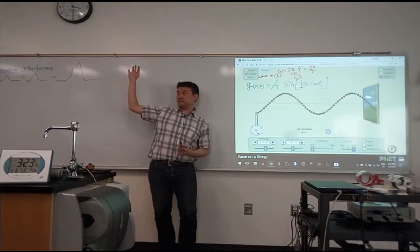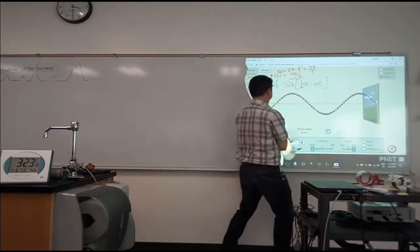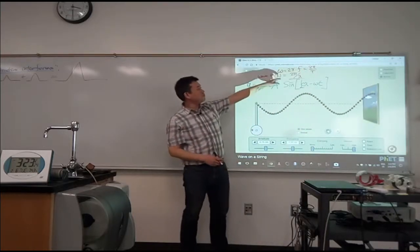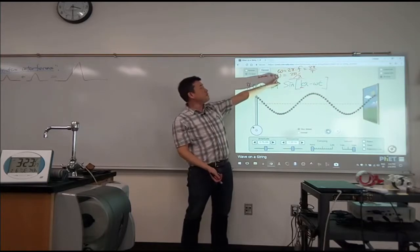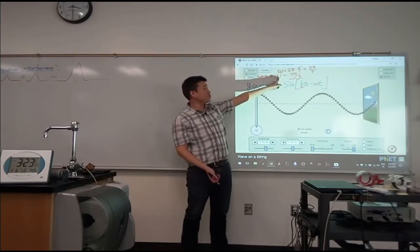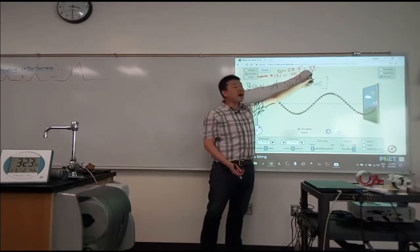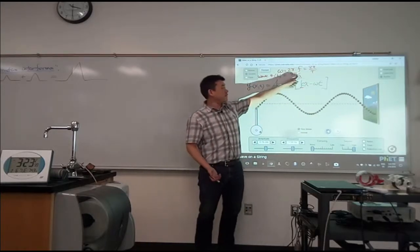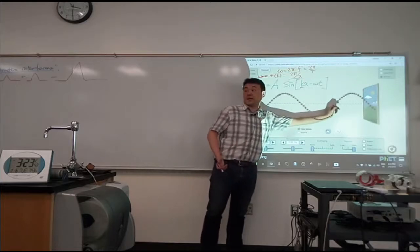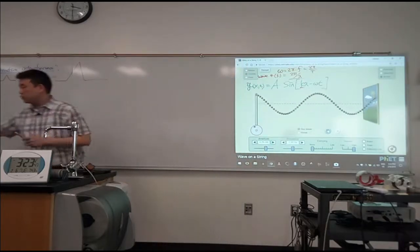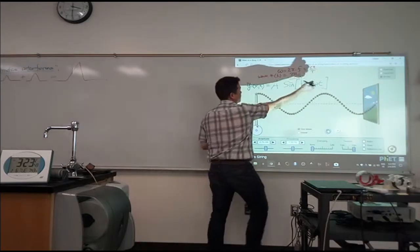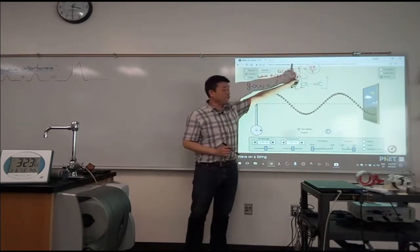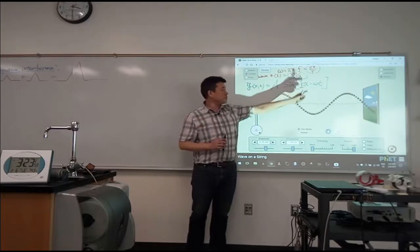Everyone knows wavelength lambda — that's the length from here to here. The best way to look at k is it's similar to omega, except in relation to position. T is how long of a time it takes for a wave to repeat itself — that's the period. Wavelength lambda is how long of a space it takes for a wave to repeat itself. So the way you define angular frequency in terms of period is similar to how we define wave number in terms of wavelength.